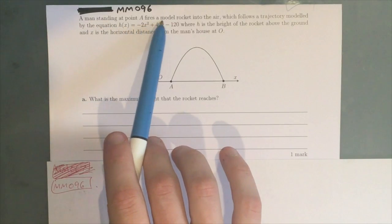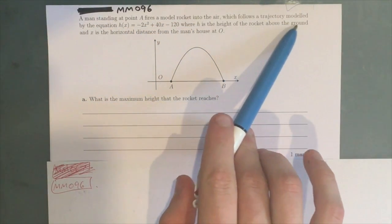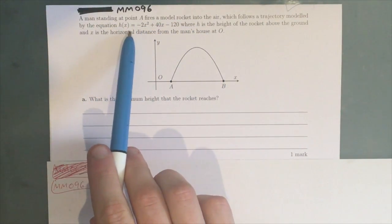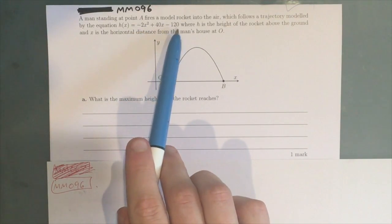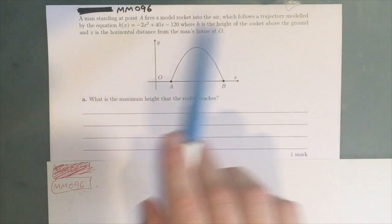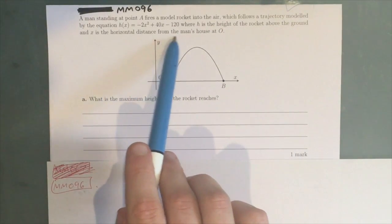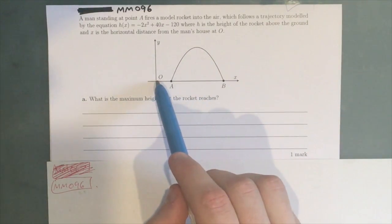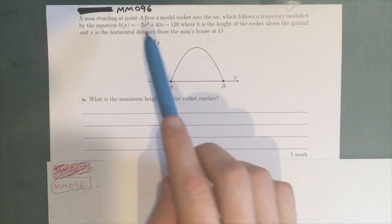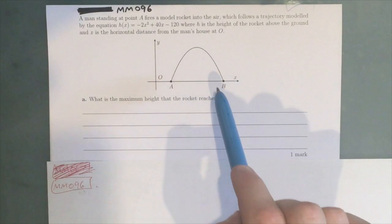A man standing at point A fires a model rocket into the air which follows a trajectory modeled by the equation H(x) = -2x² + 40x - 120, where H is the height of the rocket above the ground and x is the horizontal distance from the man's house at O. So the man's house is here, A is where the man is standing, and B is where the rocket lands.